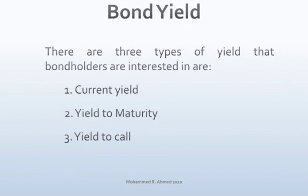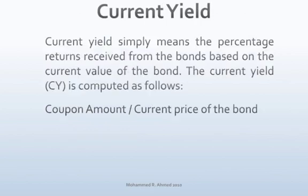There are three types of yield that bondholders are interested in: 1. Current yield, 2. Yield to maturity, and 3. Yield to call.